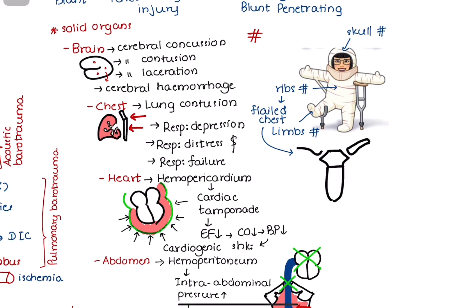Flail chest is a traumatic condition of the thorax in which two or more adjacent ribs are broken in at least two places.